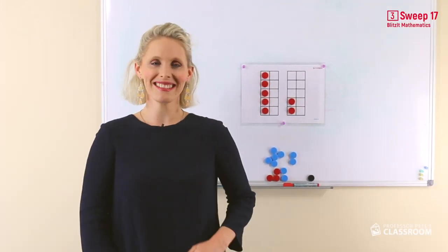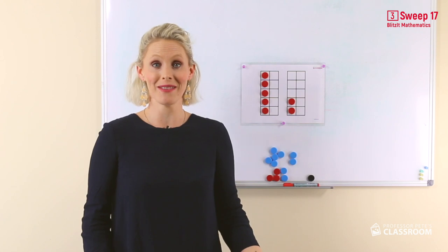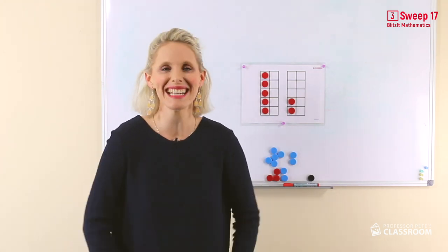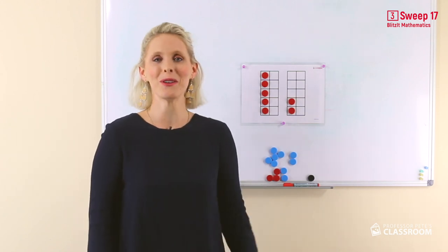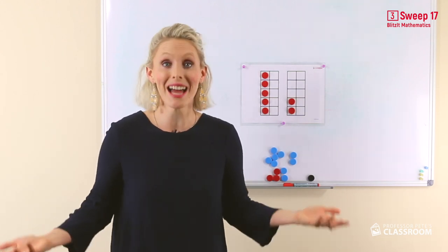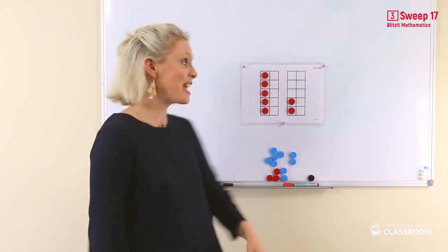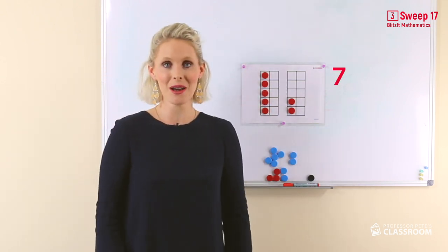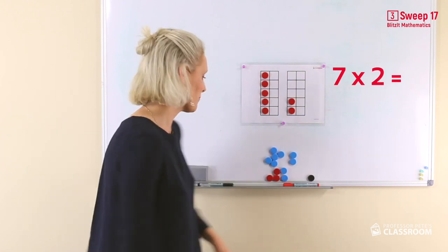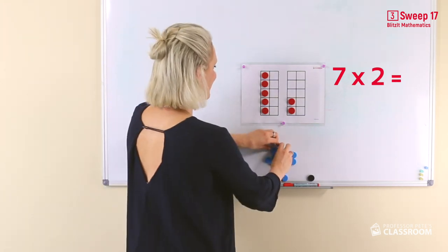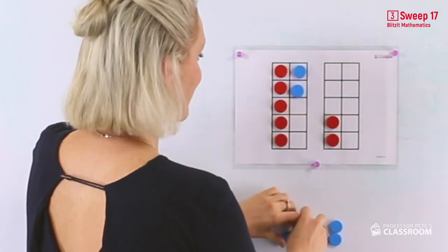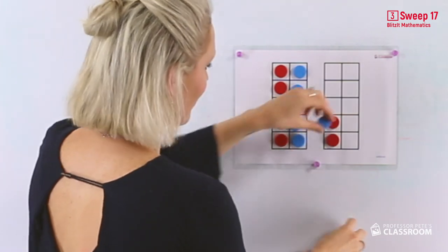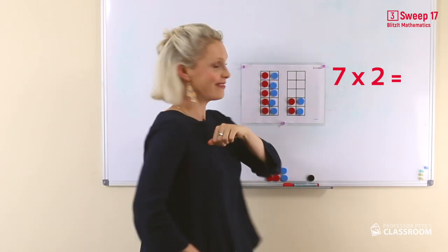Okay everyone, it's now time to look at our first strategy: multiplying by two. Easy! You can draw on what you already know — your double addition number facts. Here we have seven. If I have seven multiplied by two, that's right, it's the double! Seven and seven. Seven multiplied by two.